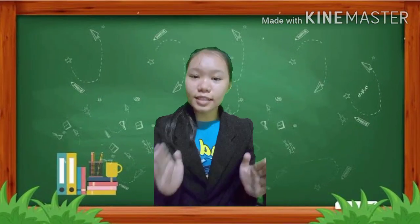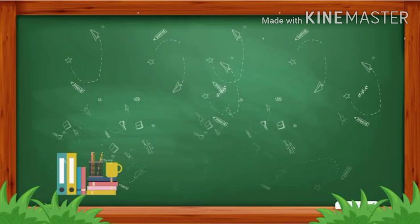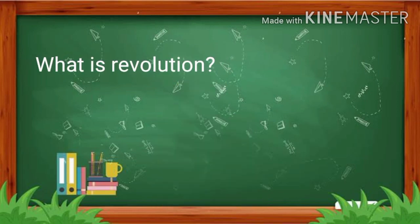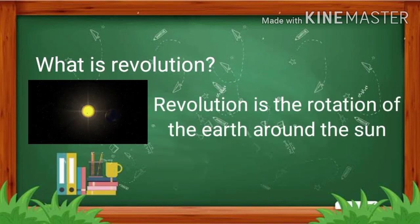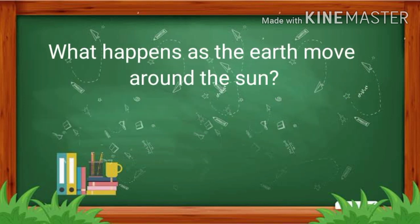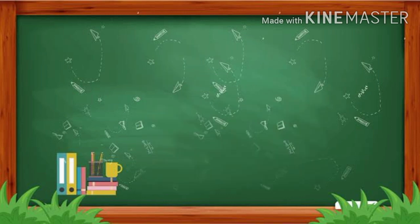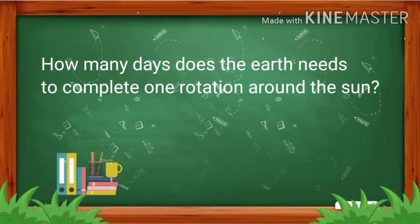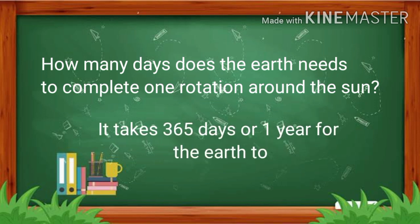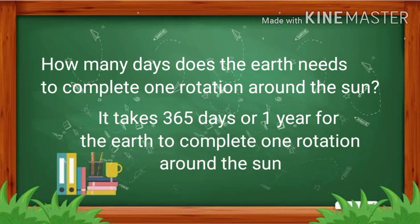Let's discuss: What is revolution? Revolution is the rotation of the Earth around the sun. What happens as the Earth moves around the sun? We experience different seasons in a year. How many days does the Earth need to complete one revolution around the sun? It takes 365 days, equivalent to one year, for the Earth to complete one revolution around the sun.